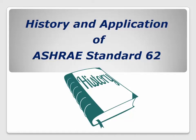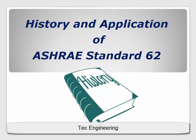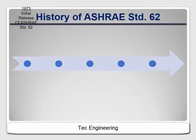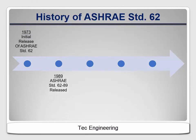Before we get into the technical details of ASHRAE Standard 62 in the upcoming lessons, it'll be helpful to first understand the history of this standard as well as its use in common residential construction applications. ASHRAE Standard 62 was originally released in 1973. In 1989, a version was released that included a recommendation of air exchange rates of at least 0.35 air changes per hour or 15 CFM per occupant.